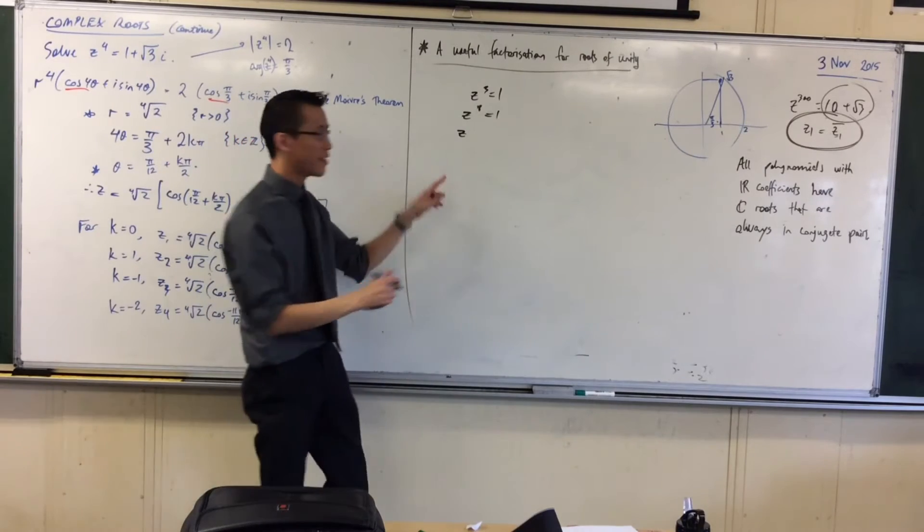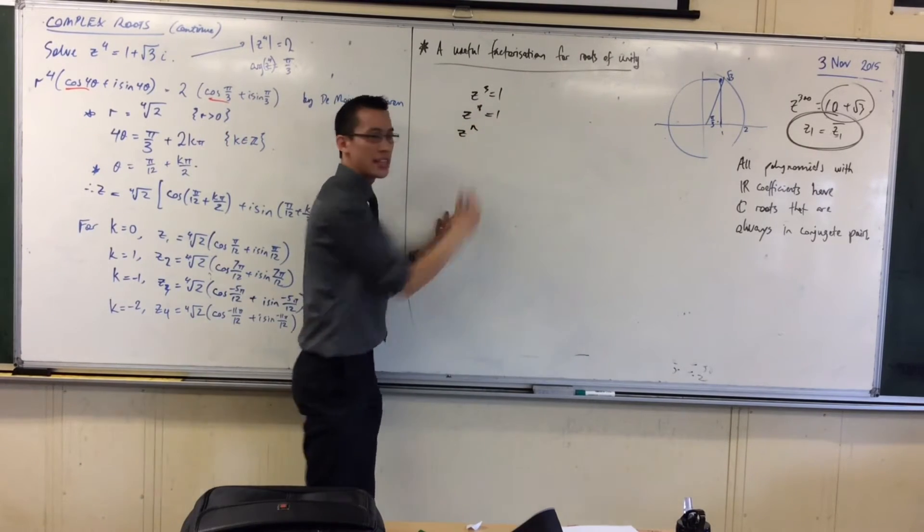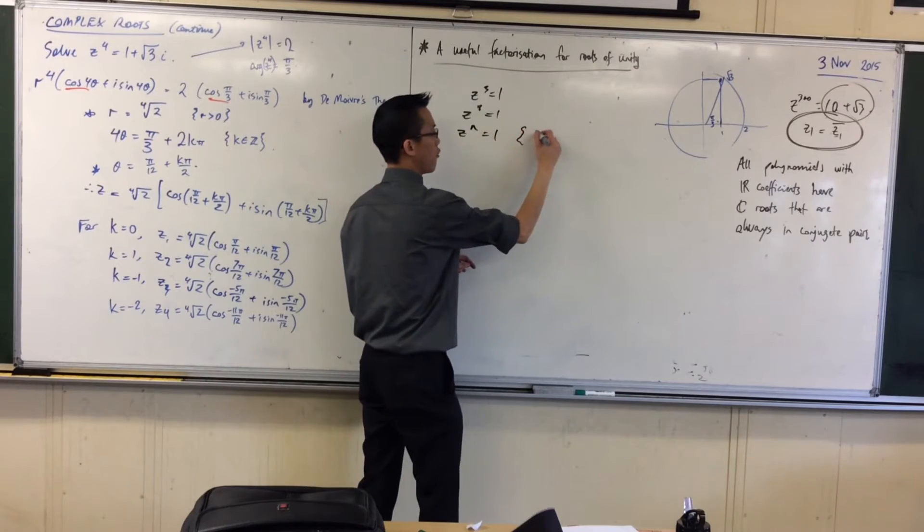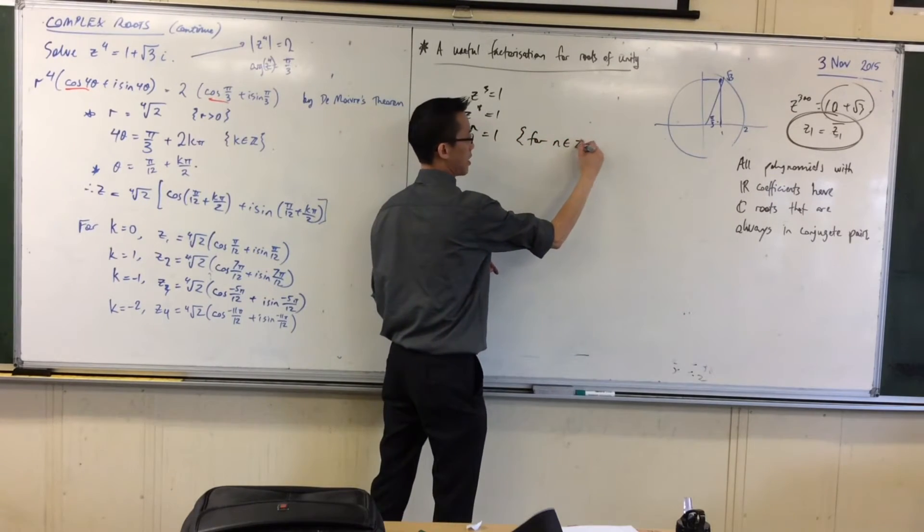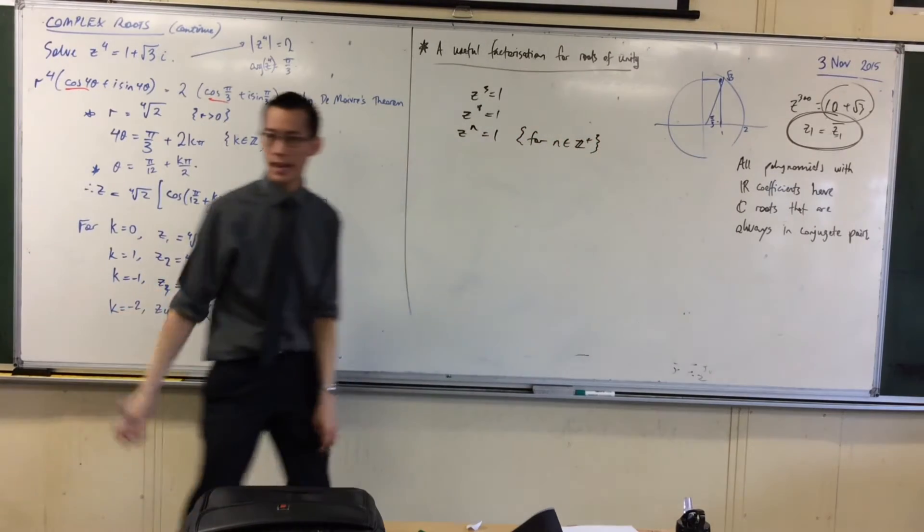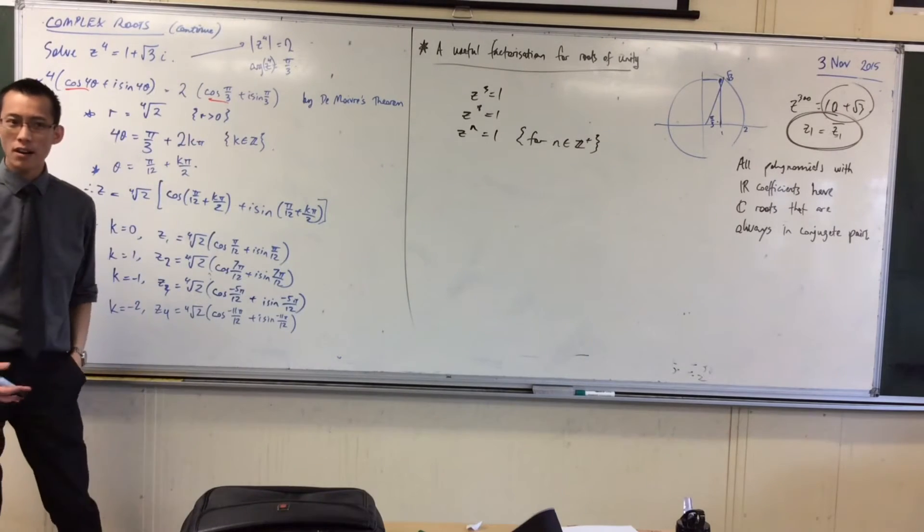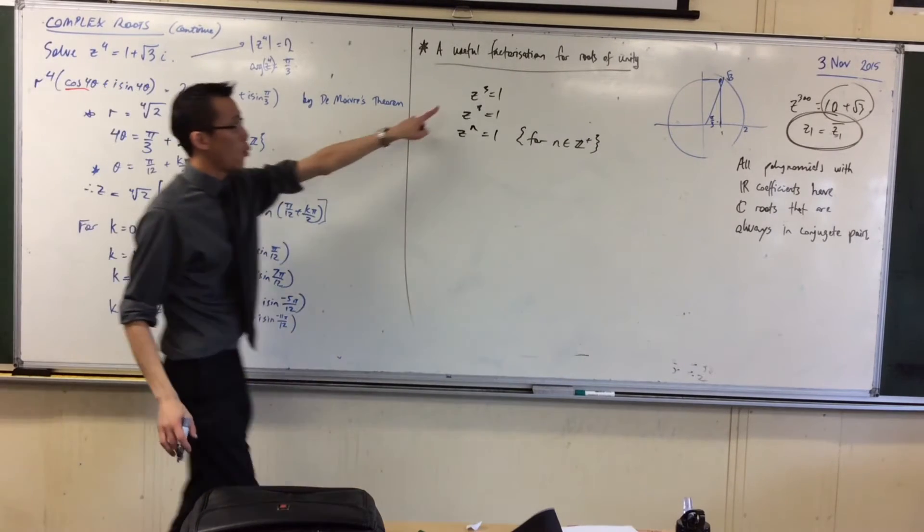So I'm going to write those, they're all in the form z to the n equals 1 for n being a positive integer. Now, you remember, right, one of the algebraic tricks we played with this guy,